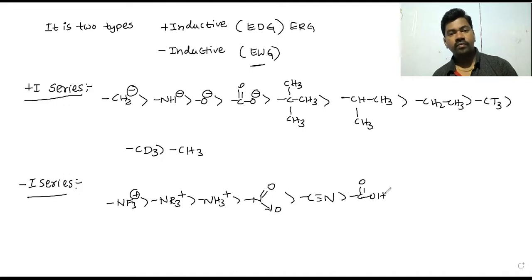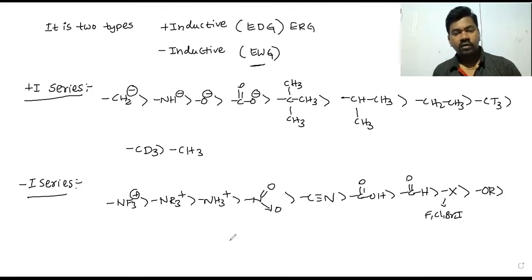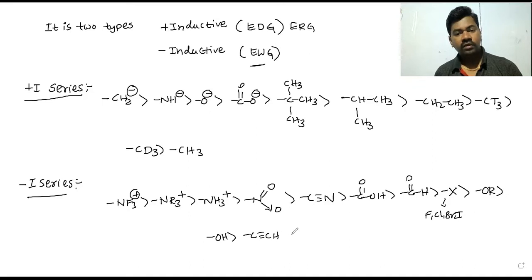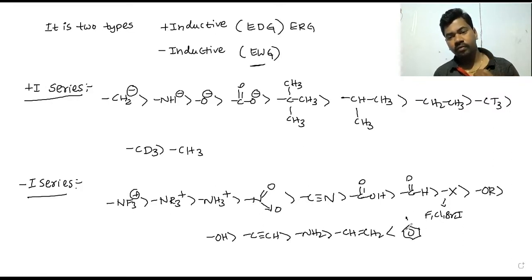In the minus I series, the groups include carboxyl, then aldehyde, then halogens — fluorine, chlorine, bromine, iodine — then alkoxy group, then OH, then C triple bond CH, then NH2, then CH double bond CH2, and finally phenyl. This is the minus I series in decreasing order.